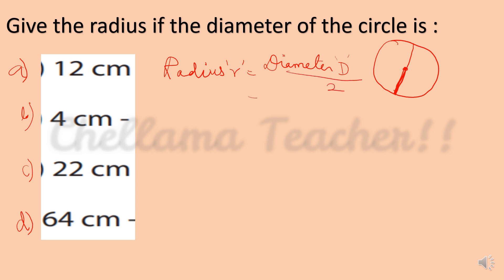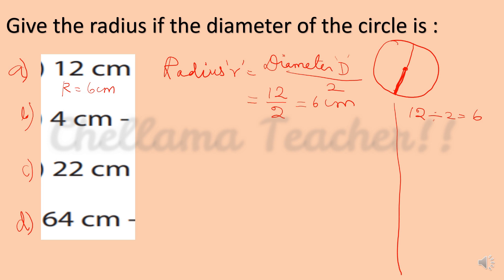For the first problem: diameter is 12, so R = 12 ÷ 2 = 6. Answer: radius R = 6 cm. For the second problem: R = D ÷ 2 = 4 ÷ 2 = 2. Answer: radius R = 2 cm.